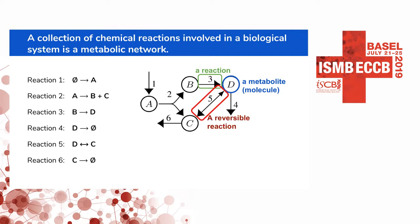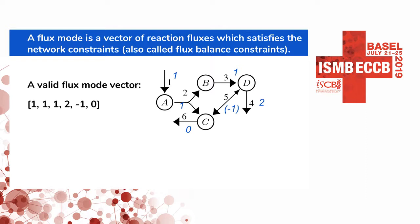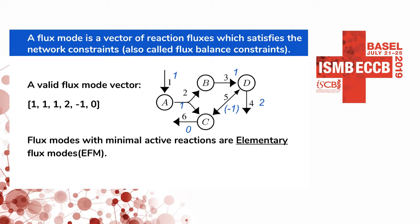A reaction can be irreversible, meaning it can have a negative flow rate as well as a positive flow rate. We can set fluxes for each reaction, and if those fluxes satisfy the network constraints, we call the vector of those fluxes a valid flux mode. Elementary flux modes are the flux modes that have minimal active reactions. We can rebuild every flux mode with linear combinations of elementary flux modes.